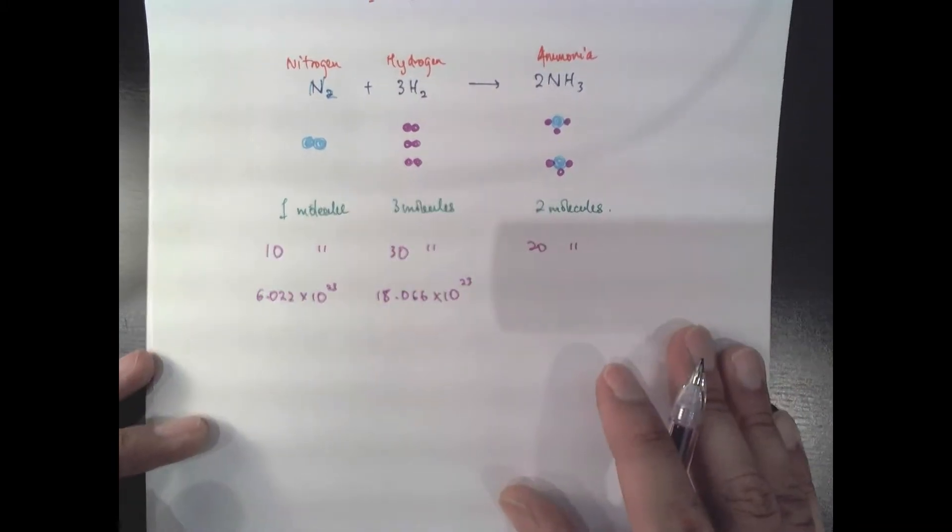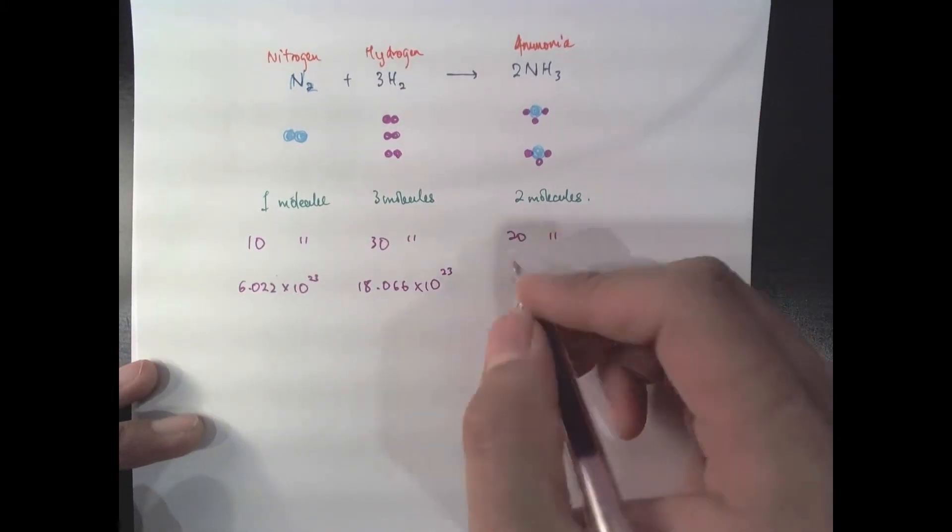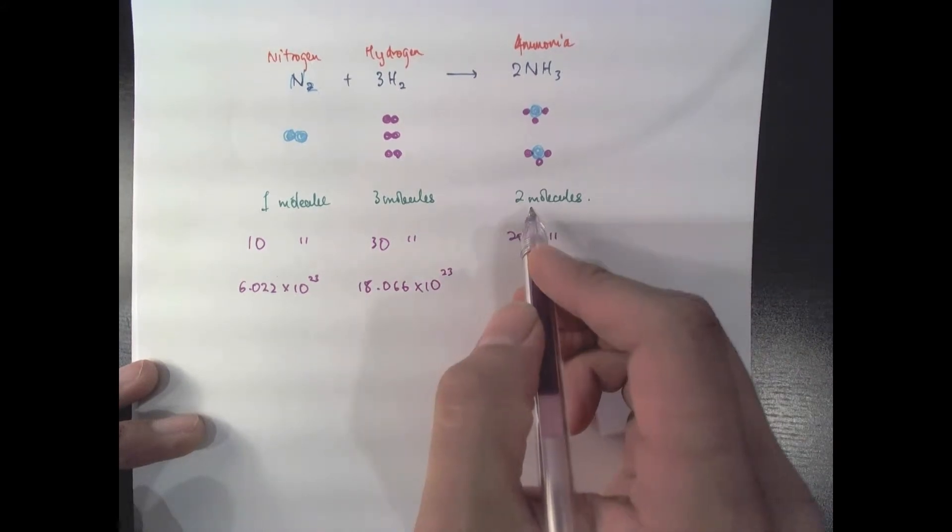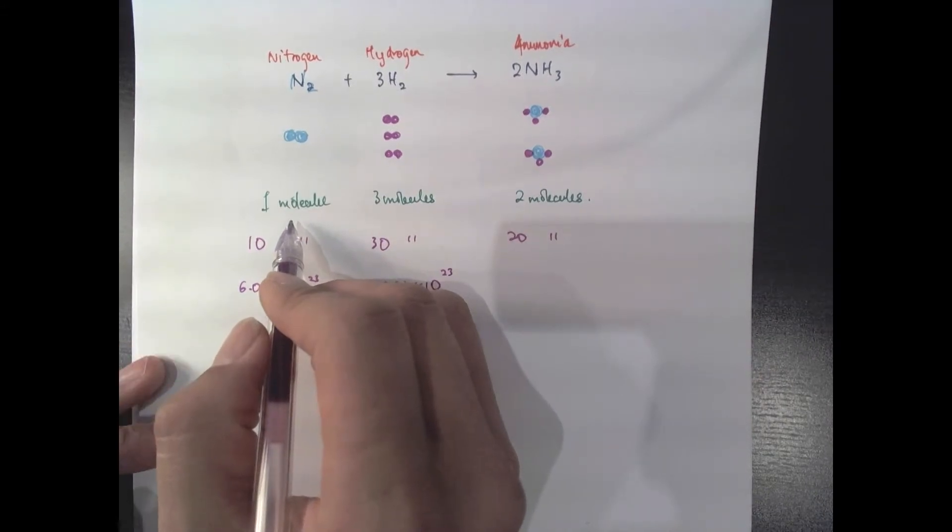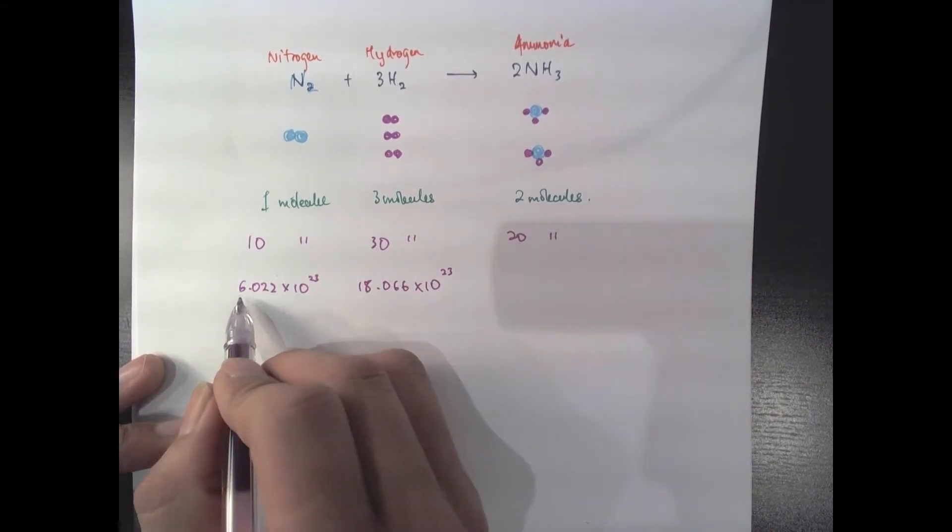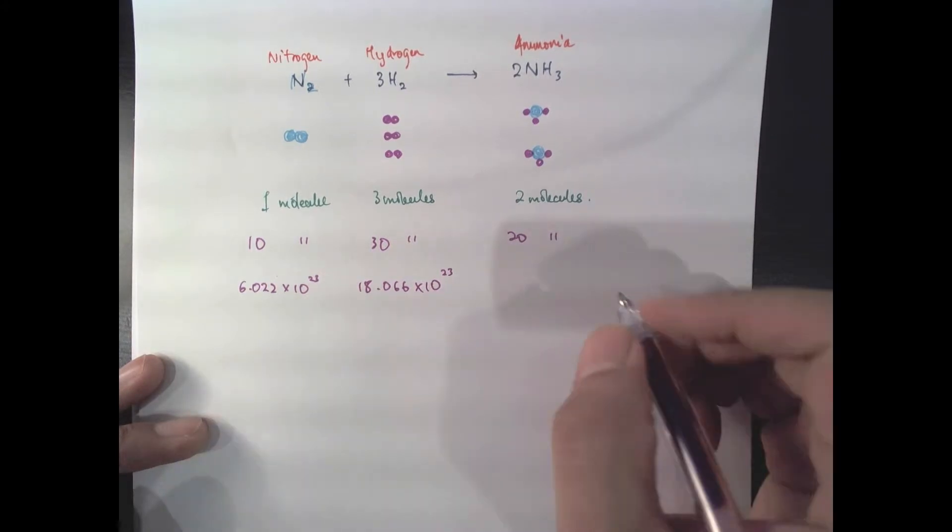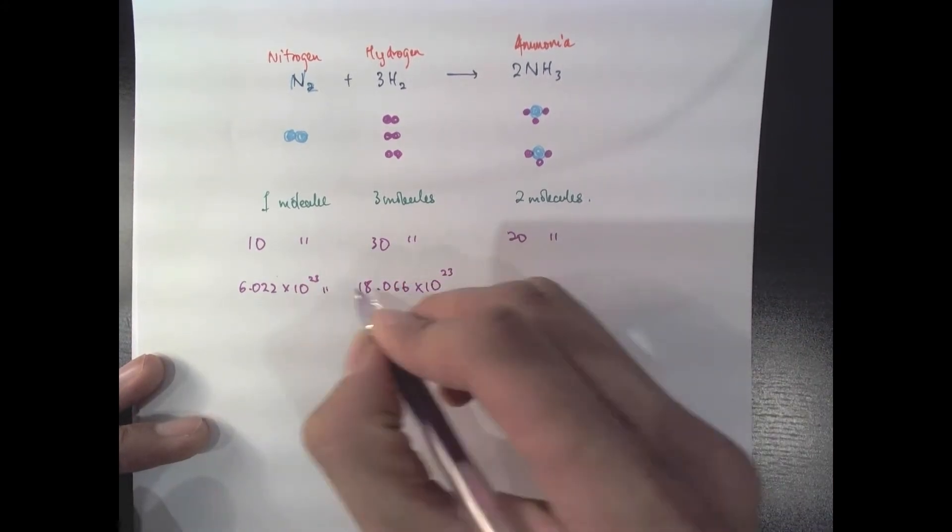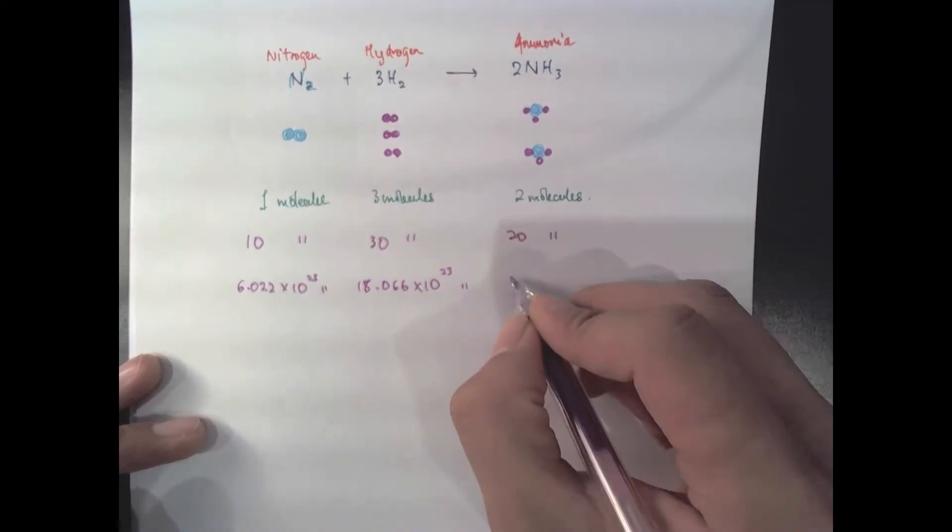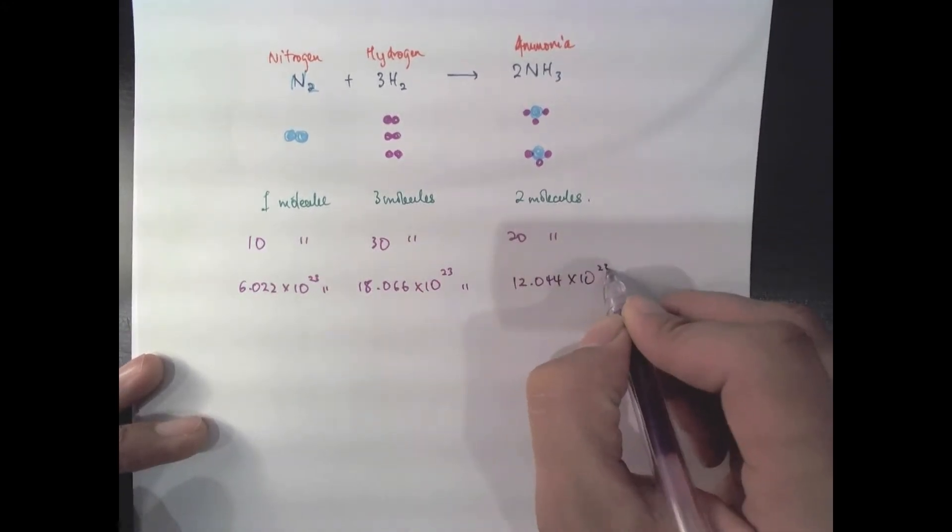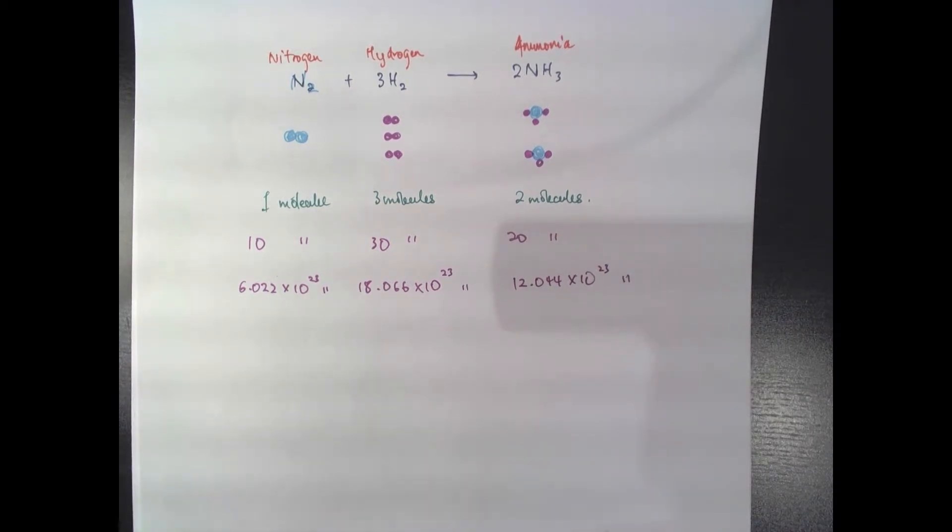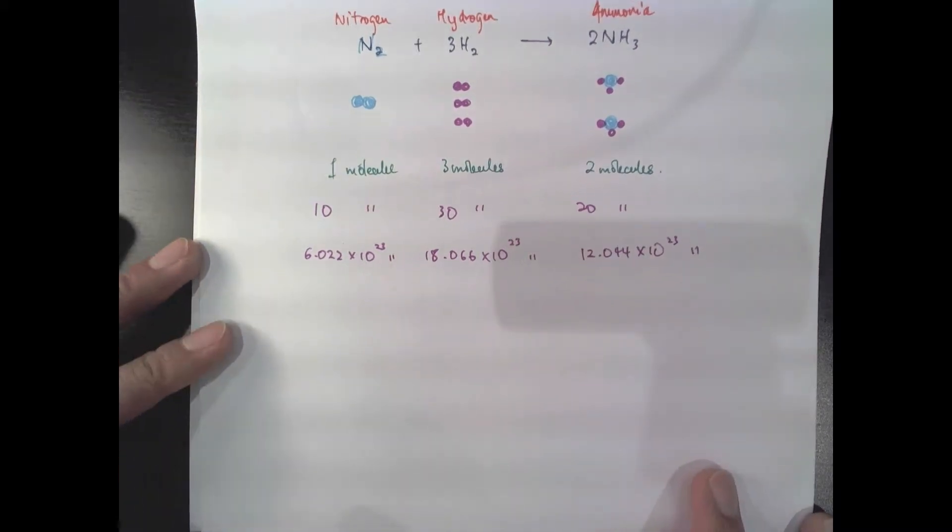So I'm going to need 18.066 times 10 to the 23. You can check my calculation. And that's going to give me twice as many molecules of ammonia as the molecules of nitrogen that I have. Since I have 6.022 times 10 to the 23 molecules of nitrogen, that's going to give me 12.044 times 10 to the 23 molecules of ammonia. Once again, you might want to verify my calculations.